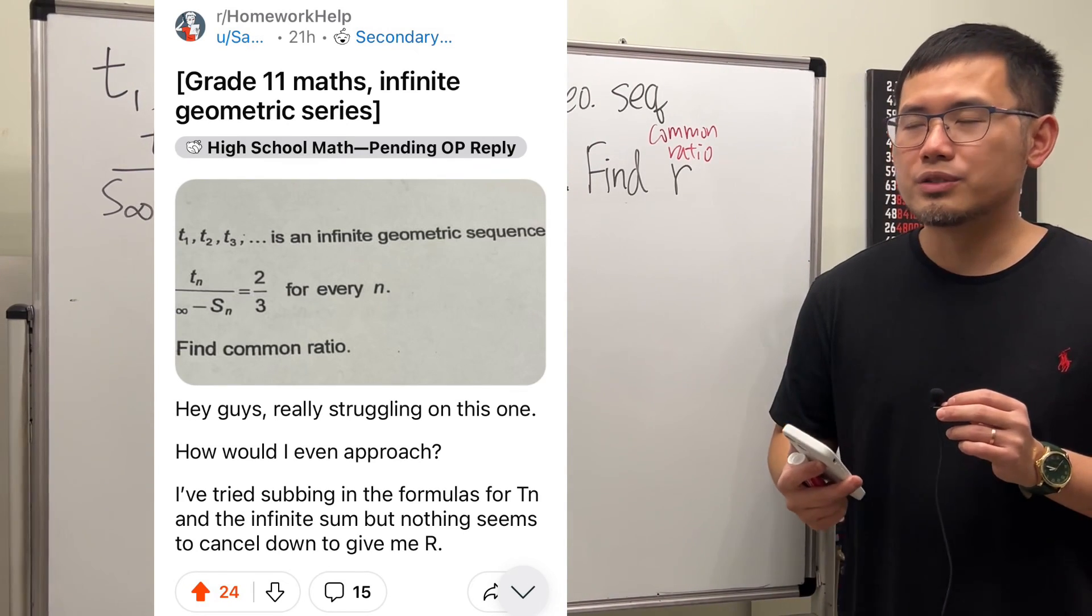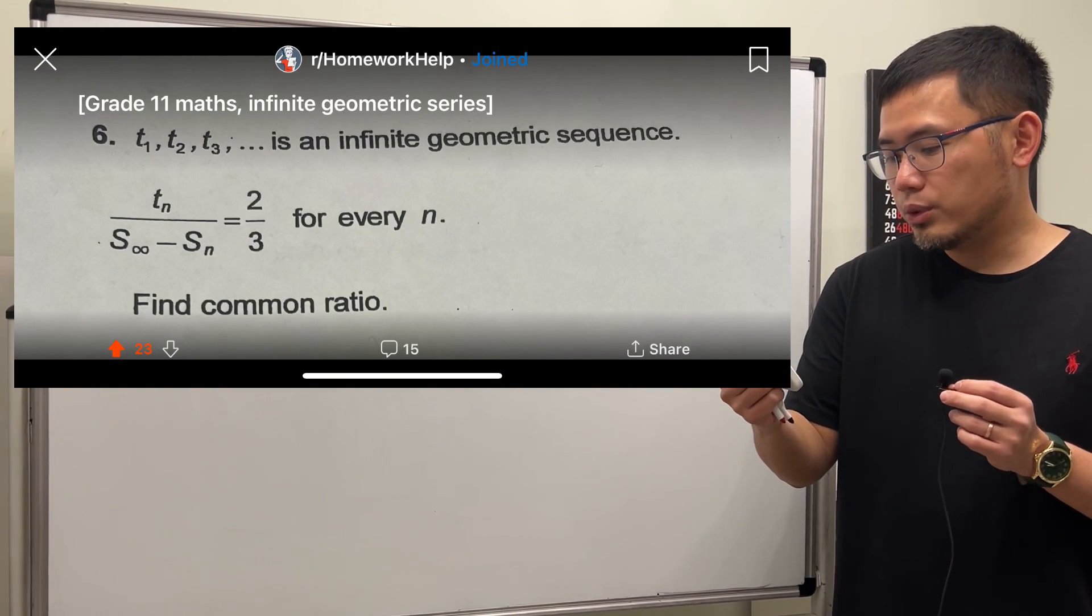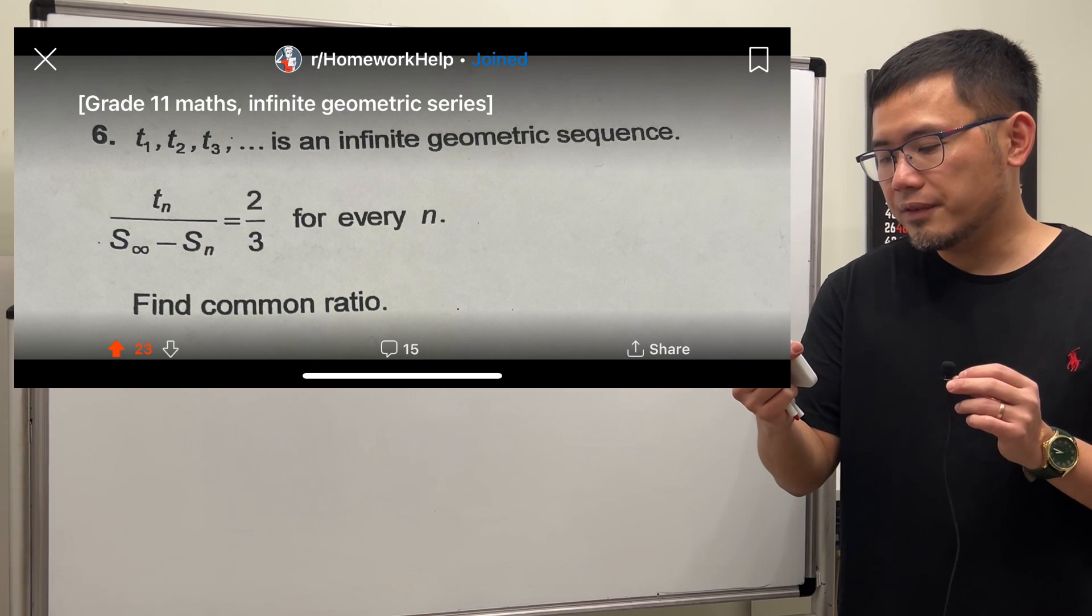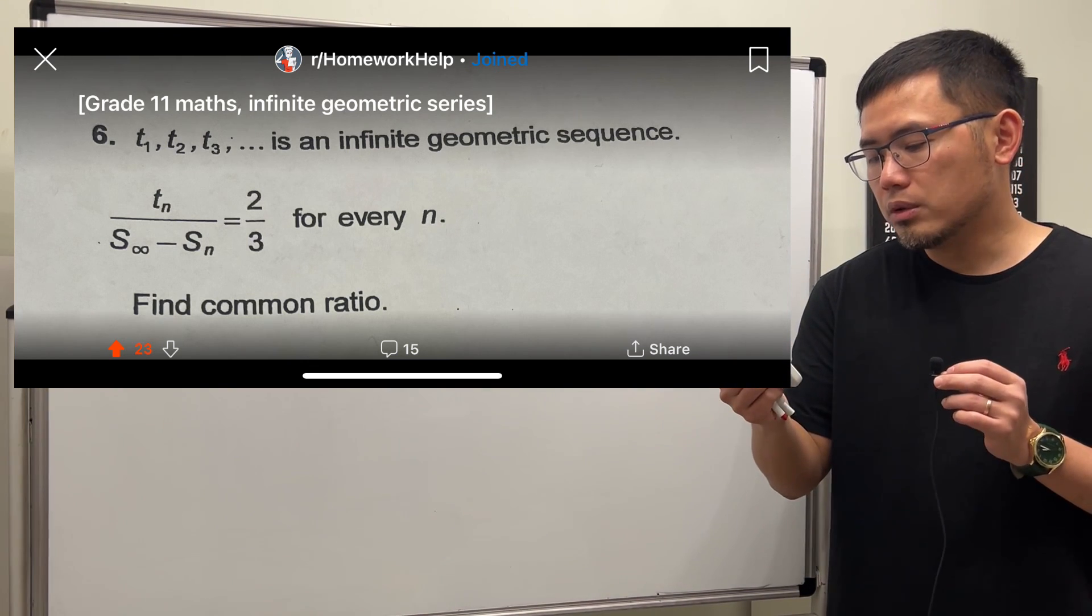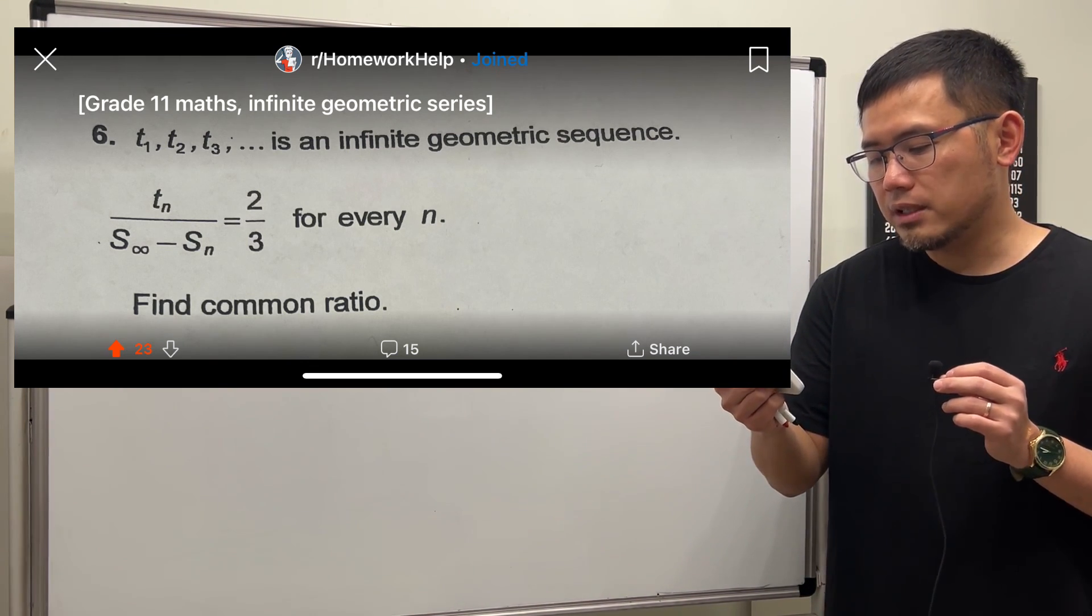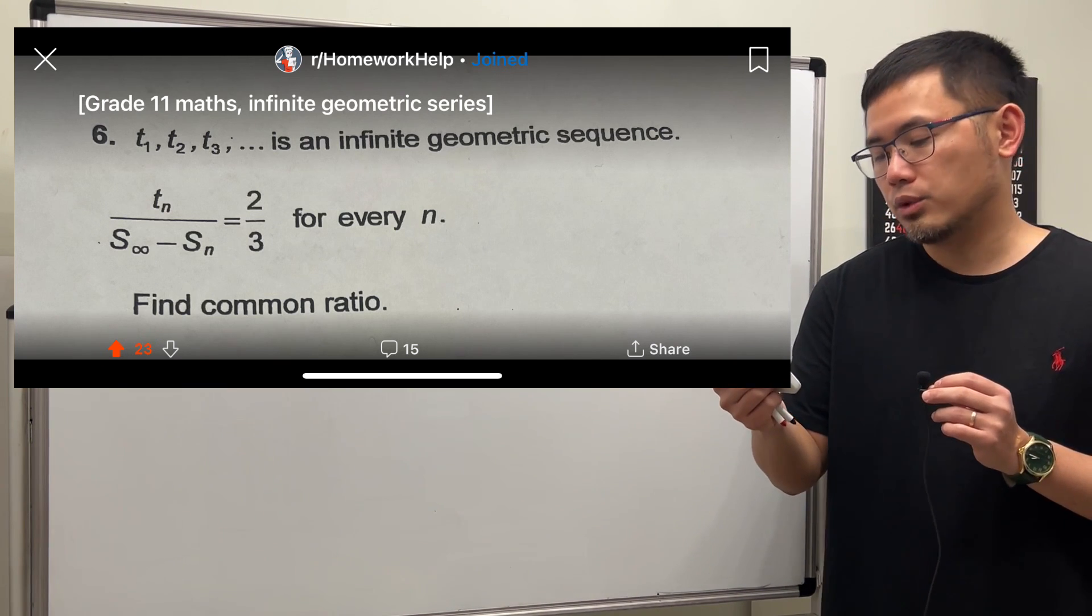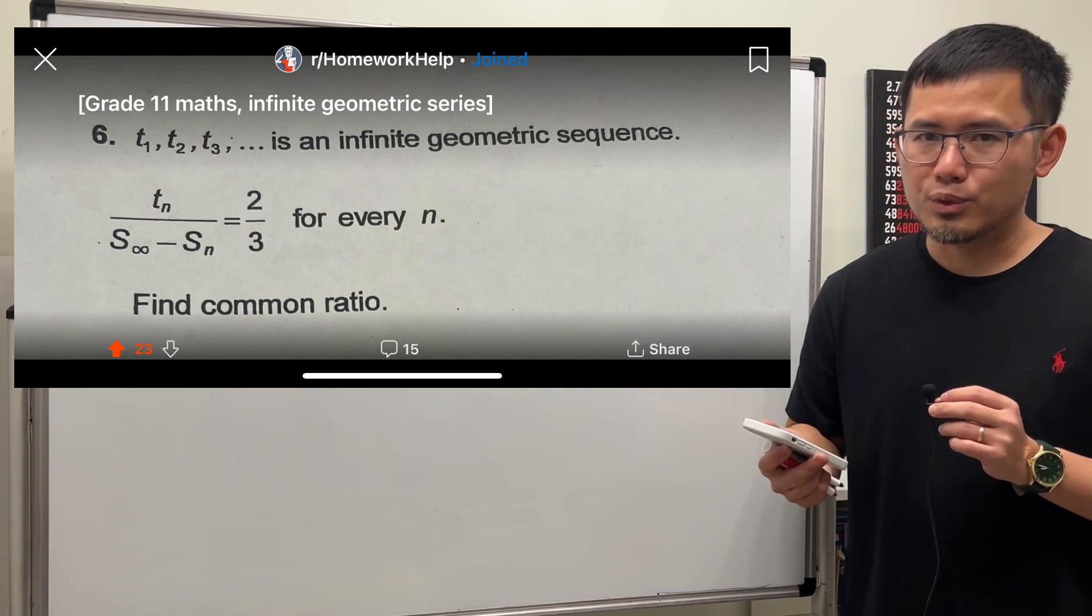Infinite Geometry Series. Here is the question. We have t1, t2, t3, and so on. It's an infinite geometry sequence. And we know tn over s infinity minus sn equals 2 over 3 for every n. We are going to find the common ratio.